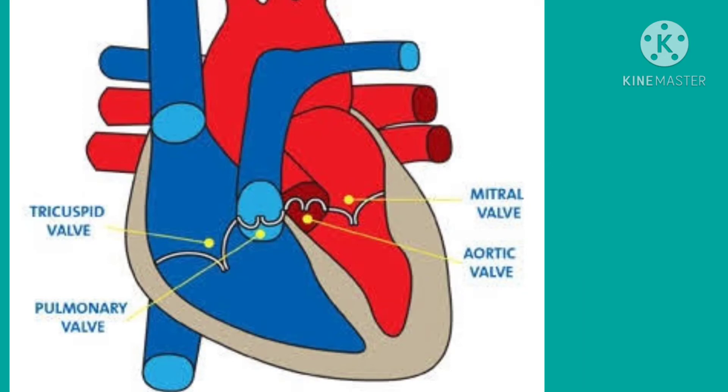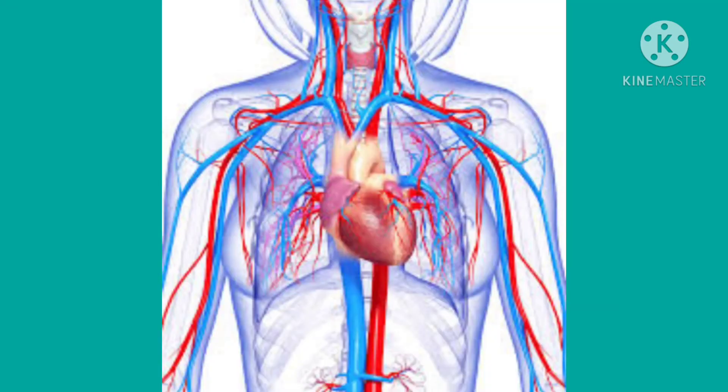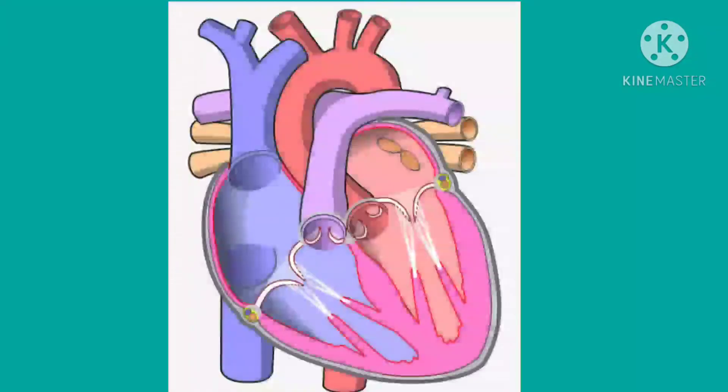These valves allow blood to flow in only one direction. Let us understand the arteries and veins which connect the heart to other parts of the body.